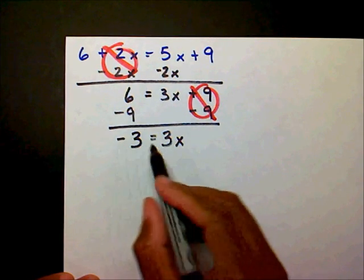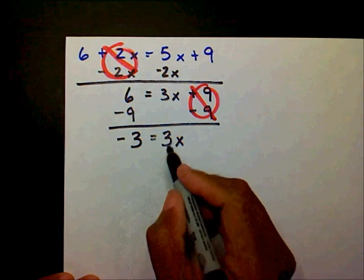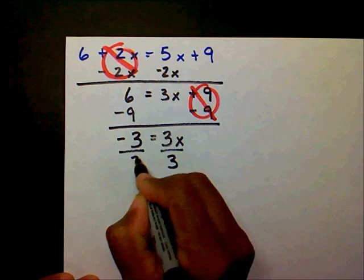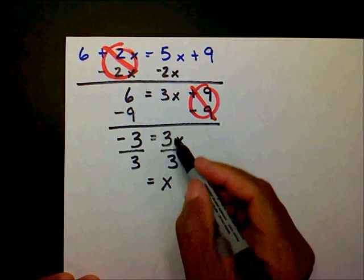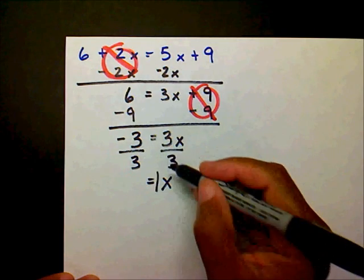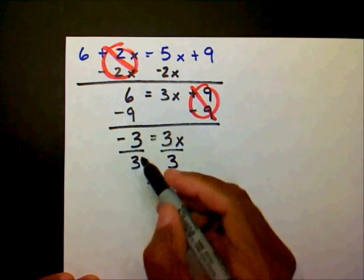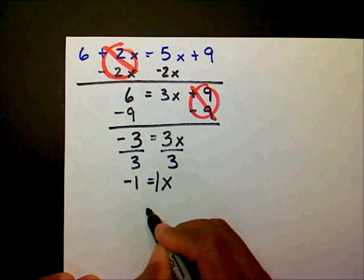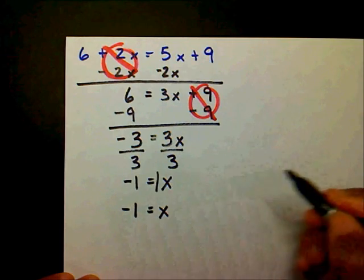We're back to a one-step equation — I have a video on that if you haven't watched it. So we're going to divide both sides by 3. 3 divided by 3 is 1, so we have x, and negative 3 divided by 3 is negative 1. So x equals negative 1.